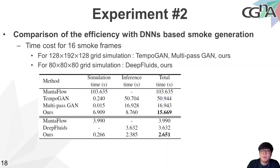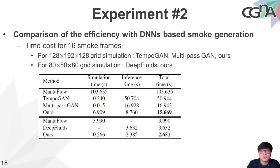To compare with previous smoke generation methods that use deep neural network models, we implemented and trained those methods to generate a smoke density field of the same size as our experiment. The computation time required by the proposed method is smaller than that required by previous smoke generation methods, confirming that the proposed method can more efficiently generate smoke simulation than physics-based simulation methods or DNN-based methods.